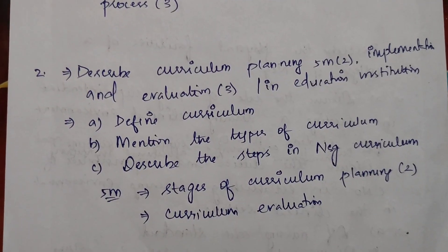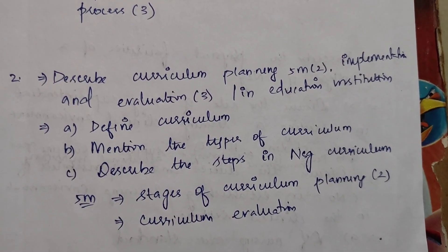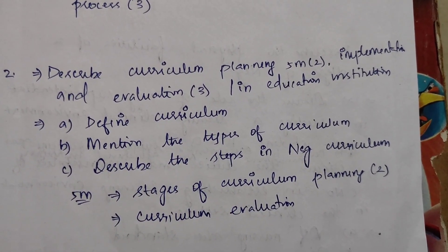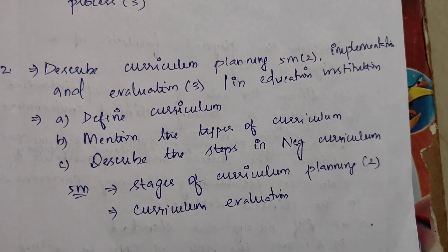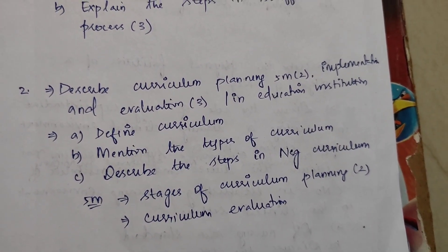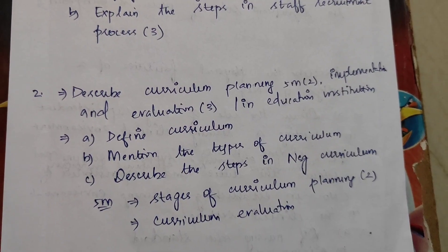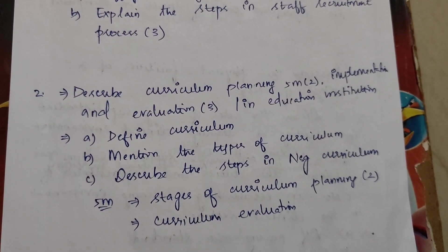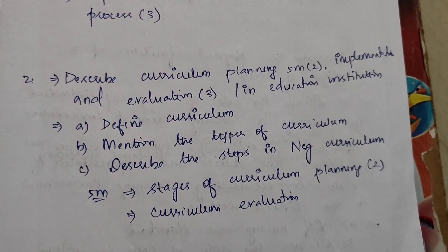Next, describe curriculum planning, implementation and evaluation in a nursing institution. We will get this question in 5 marks — curriculum planning appears two times in 5 marks. Implementation and evaluation overall appears three times.